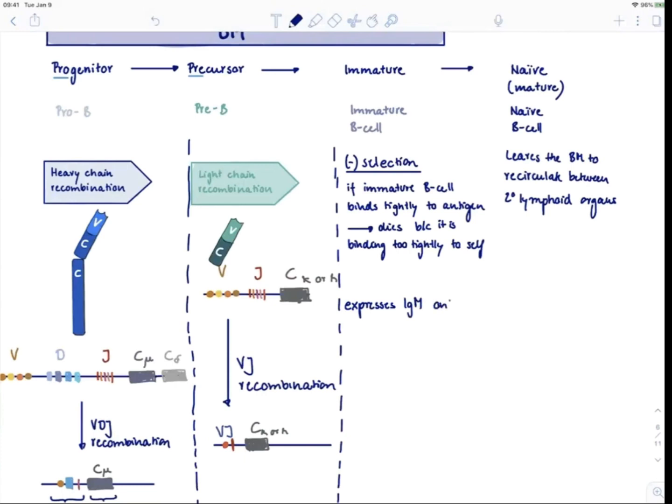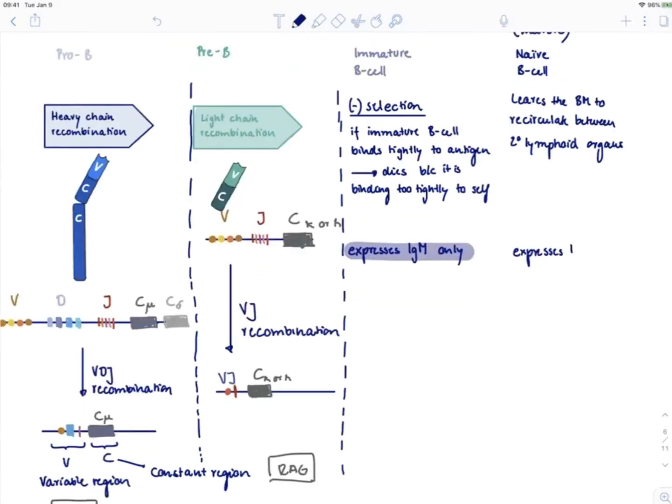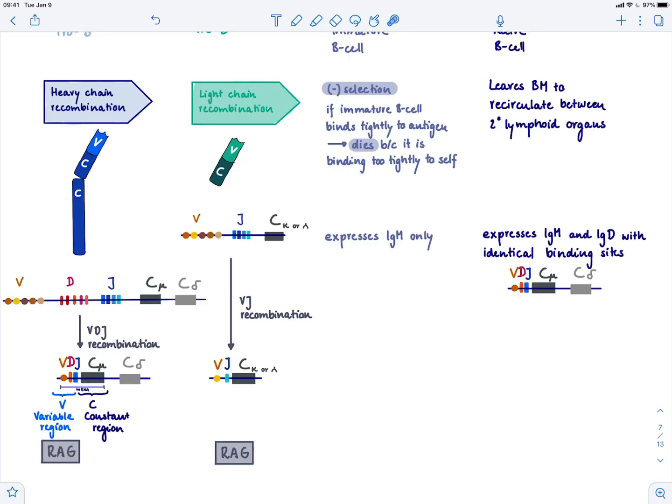Later, when it becomes a naive B cell and leaves the bone marrow to recirculate between secondary lymphoid organs, it will express IgM and IgD on its surface. If you're wondering why those isotypes, you can see here this is a constant mu domain, which gives rise to IgM, and this is a delta, which gives rise to IgD. These are just first in line. We'll learn later there are many more isotypes of antibodies like IgG, IgA, and IgE, and you need another process to get these different isotypes.